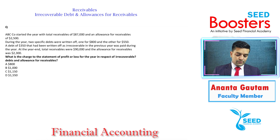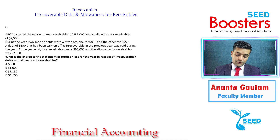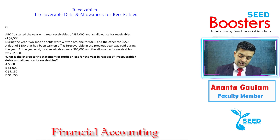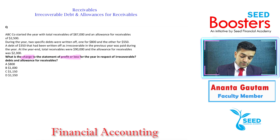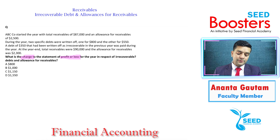So this question states: what is the charge to the statement of profit or loss for the year in respect of irrecoverable debts and allowance for receivables? So what is the charge to the statement of profit or loss — that is, the income statement — in respect of irrecoverable debts and allowance for receivables?